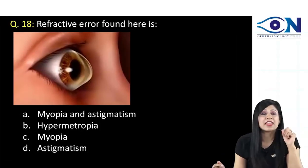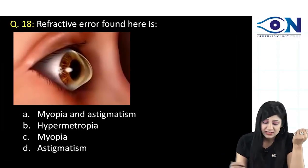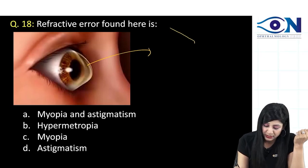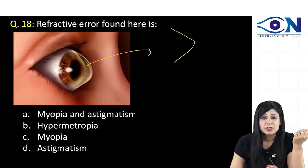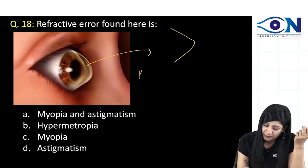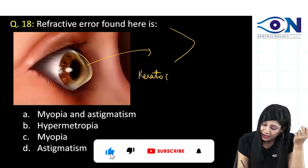Coming to the next one, refractive error found here. What is this actually here? You can see the conical protrusion of the cornea. Conical protrusion of the cornea means it is a case of keratoconus.